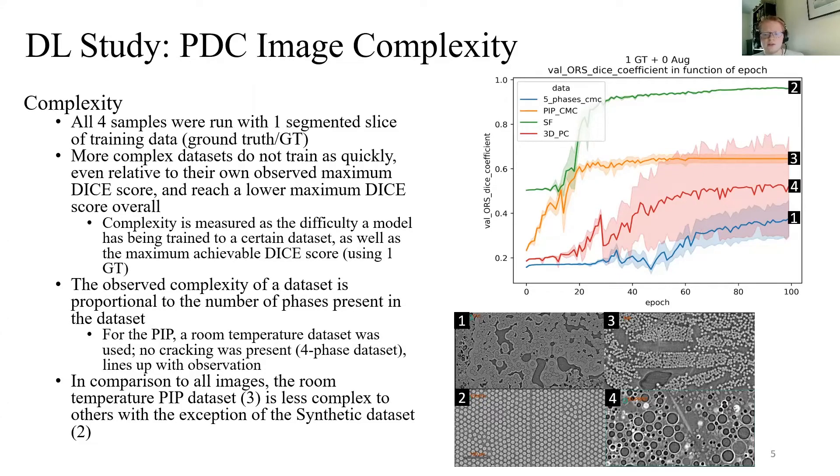So despite the five-phase CMC and 3D-printed composite being the same amount of phases, the 3D-printed has features that occur uniformly. The AI learns that certain phases tend to manifest in certain ways and if you look in the figure in the bottom right, number four is the 3D-printed composite. You'll notice repeating circles or spheres that are easier for the AI to segment than arbitrarily appearing pores in the five phase.